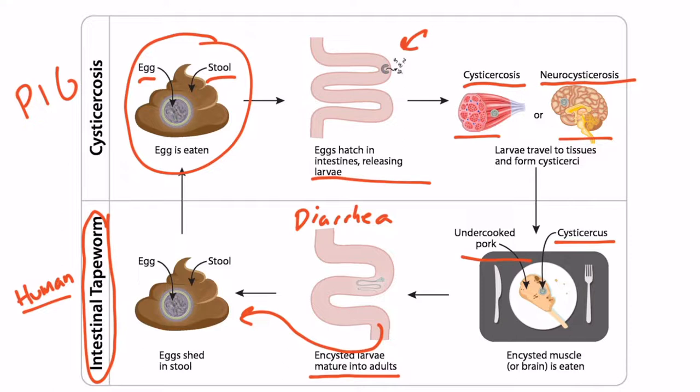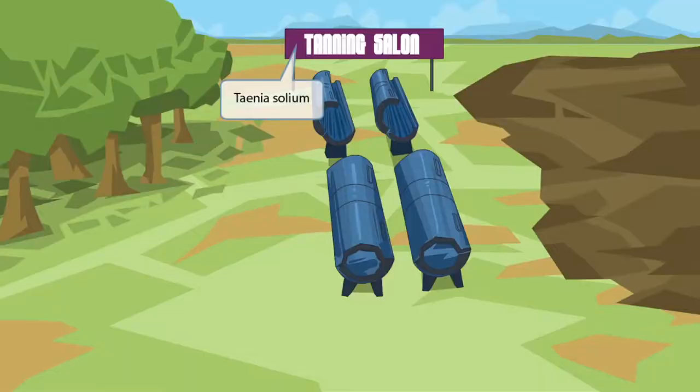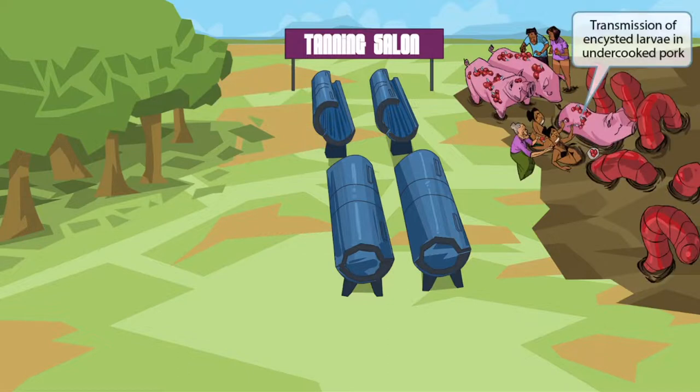With this conceptual framework, let's dive into the image to help you memorize the details of Taenia solium. Our story takes place in an outdoor tanning salon — kind of funny that the salon is outdoors, since you could just as easily get tanned by being outside. Tanning salon sounds like Taenia solium, the parasite we're discussing. Unfortunately for the tanning salon, they happen to build their business adjacent to a pig farm. Pigs smell super gross after all.